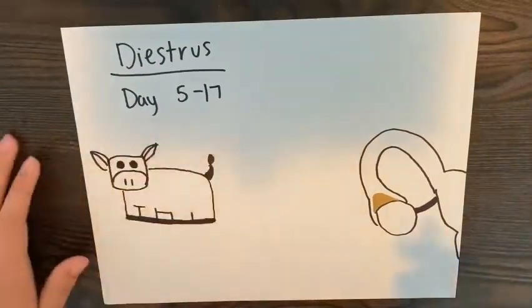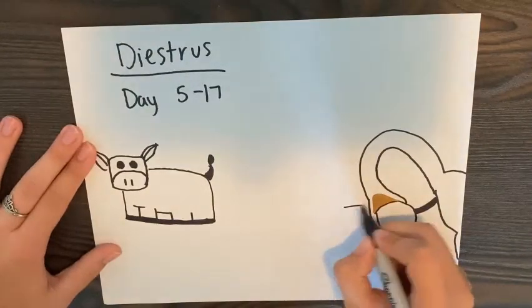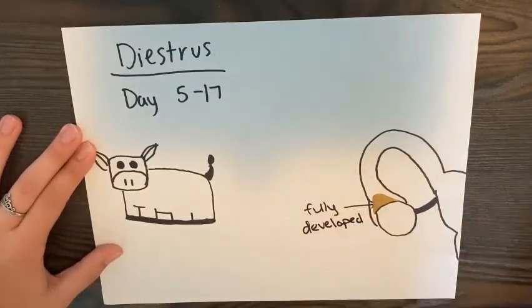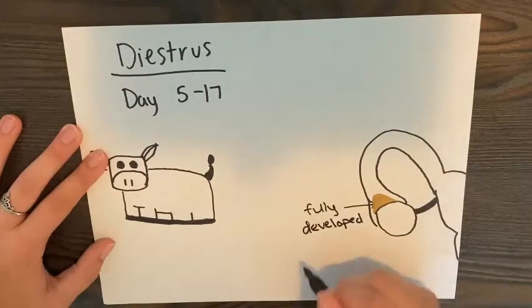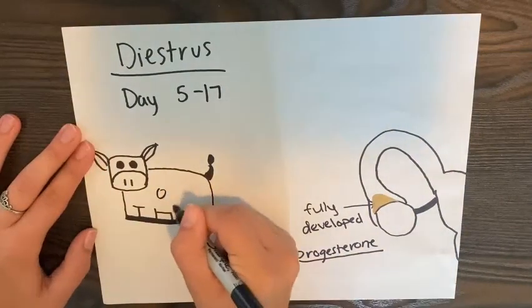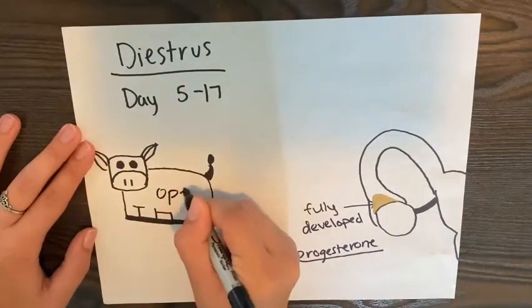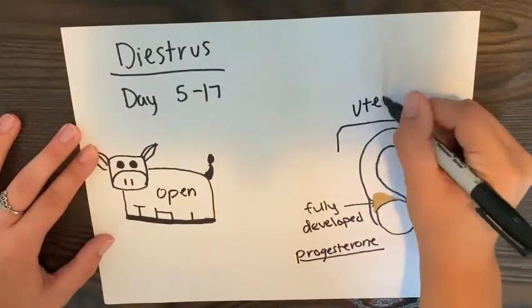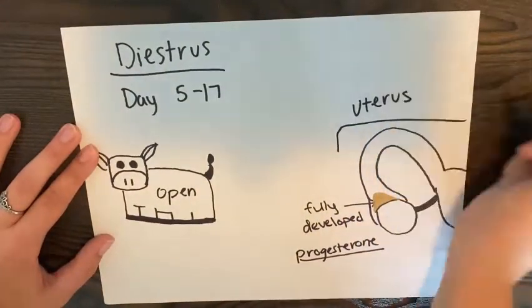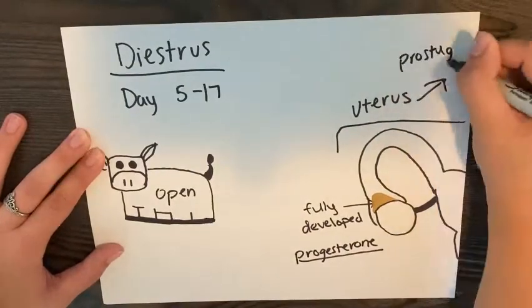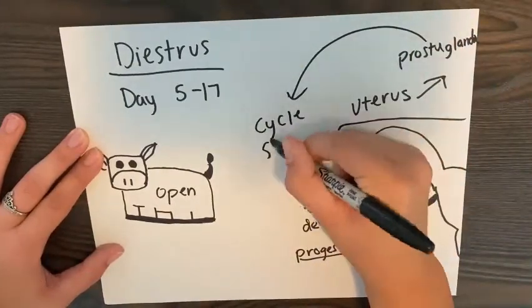Diestrus lasts from day 5 to 17 of the cycle. It is the time that the fully developed corpus luteum is steadily releasing progesterone. At the end of diestrus, if no pregnancy signals are received by the corpus luteum, then the uterus releases the hormone prostaglandin, which causes the regression of the corpus luteum and the decline in progesterone, starting the cycle again.